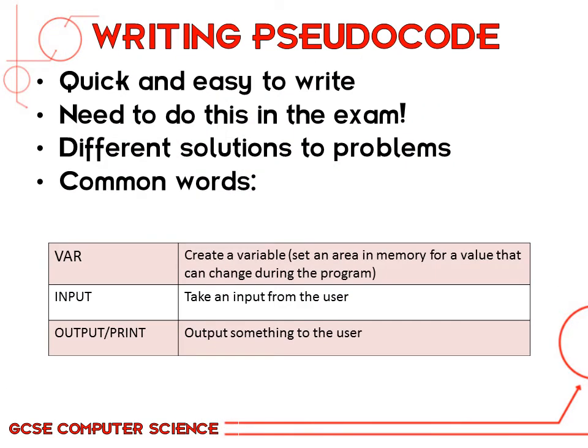Pseudocode is quicker and easier to write than normal code, and you're going to have to do things like this in your exam. You'll find different ways of doing it and different solutions to the same problem — like two different methods for doing the same thing. The table at the bottom shows a few of the common words used in pseudocode and what they can be used for.